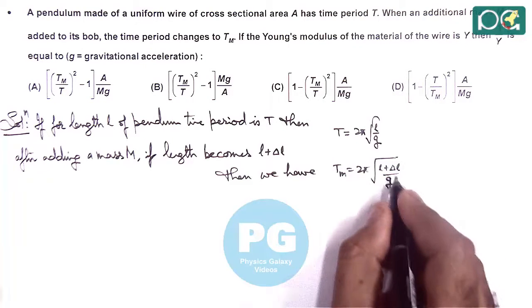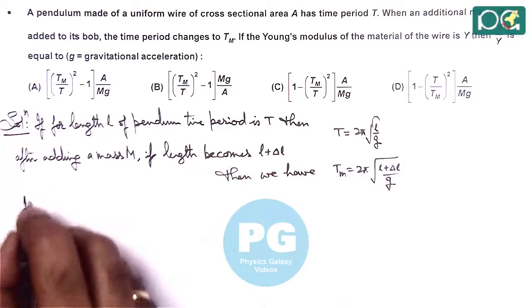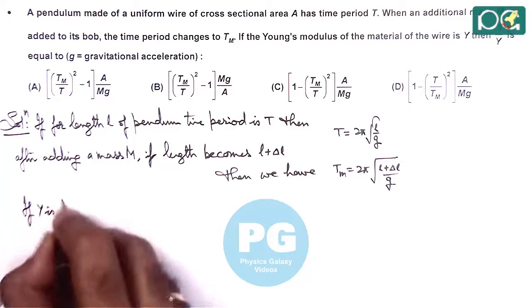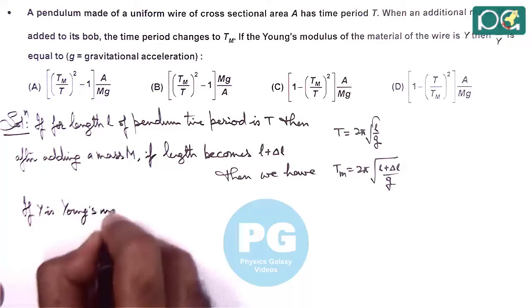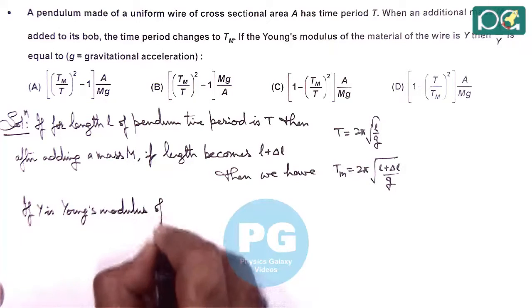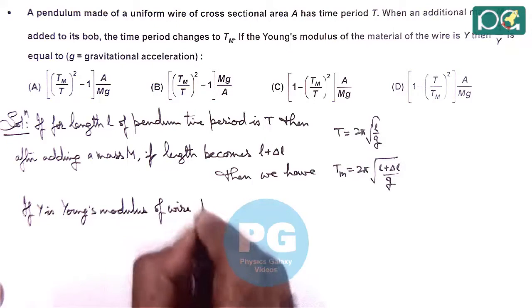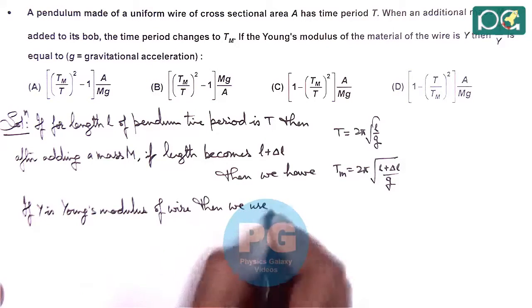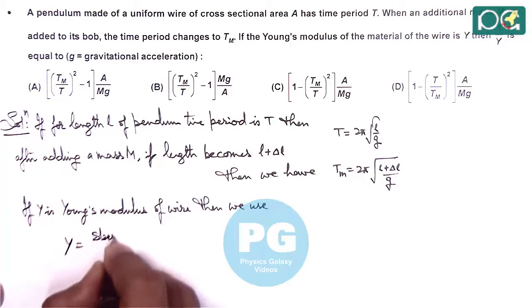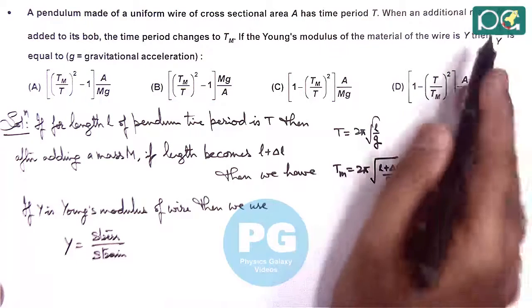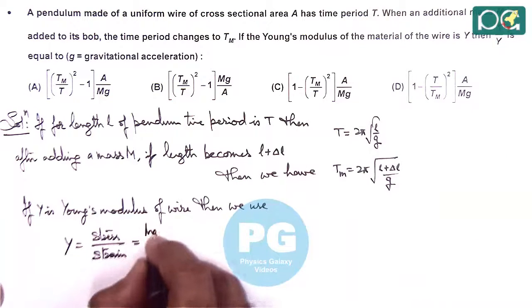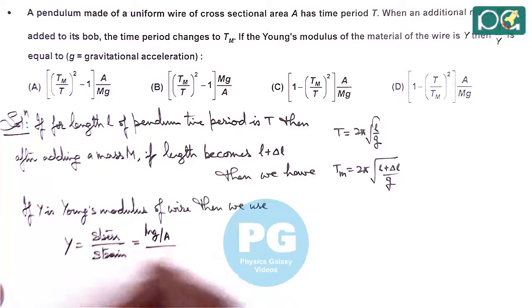And in this situation, delta L we can calculate if Y is Young's modulus. Then we use Young's modulus equals stress by strain. The stress is because of the additional mass M, which is Mg/A, and the strain is delta L/L, which gives us delta L/L equals Mg/YA.